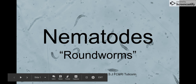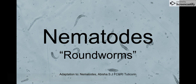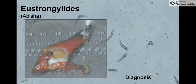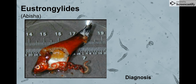Today, on our nematode lecture that parallels the Ibusha PowerPoint, we'll be discussing Eustronglides. These are very disgusting, for they are found not in the intestines, but more in the muscle tissues of the fish.